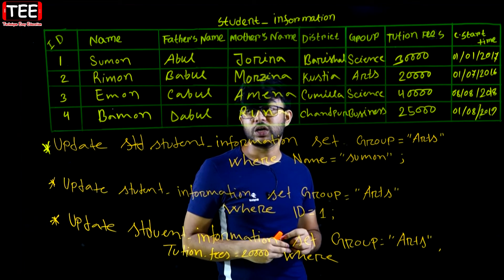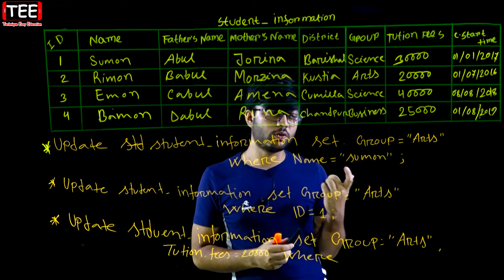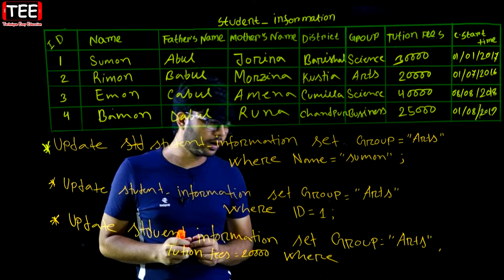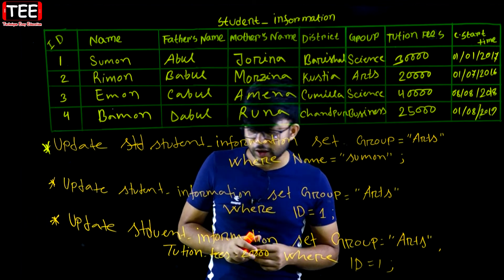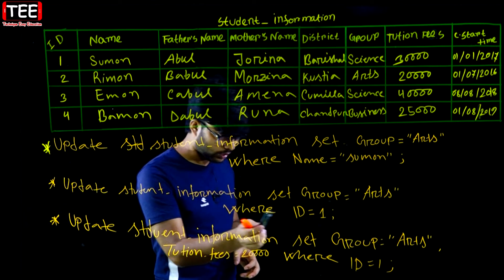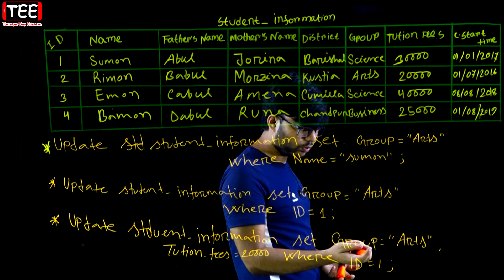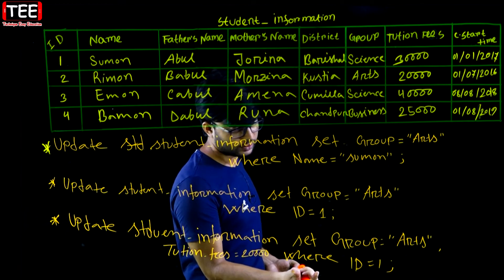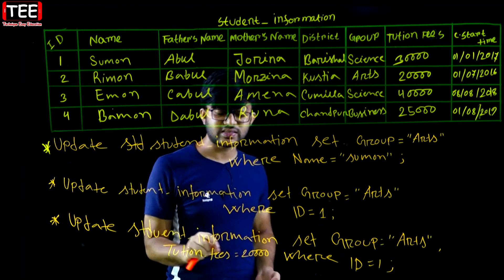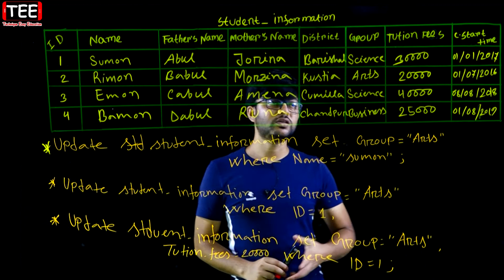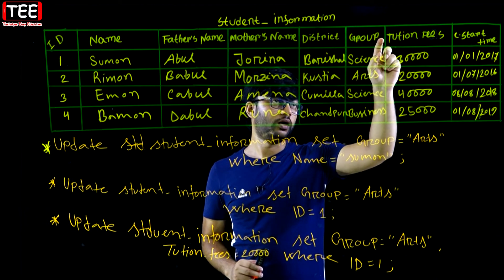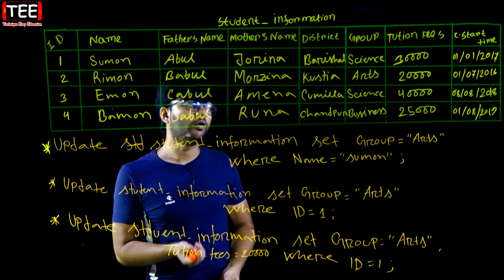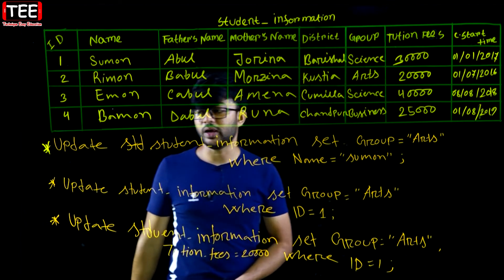Here, the student table has been updated. UPDATE has run on the table. After the update, what was SET — group is equal arts, comma, tuition = 20,000 was SET. The record was changed using WHERE id = 1. That particular record was changed — the id column, where id = 1, that record was changed.